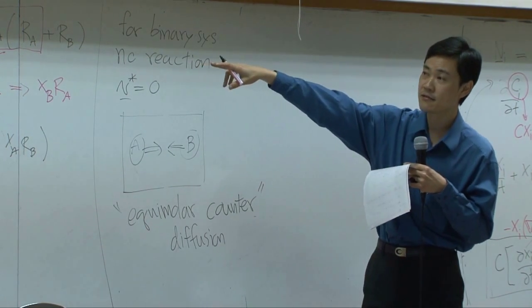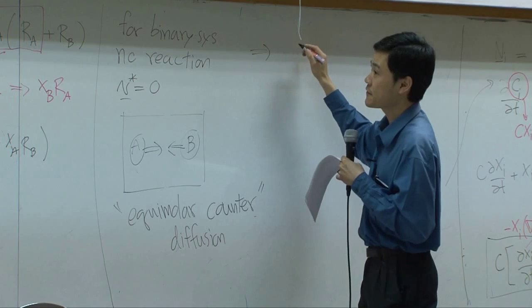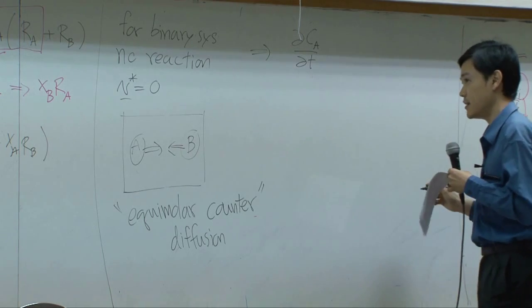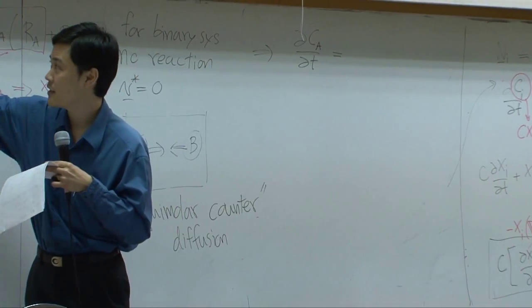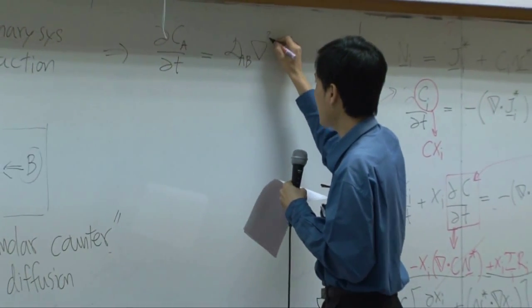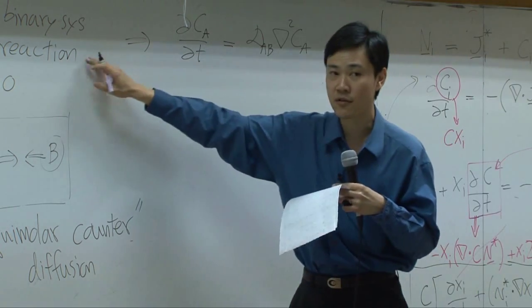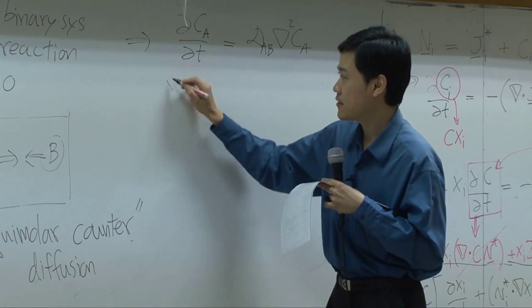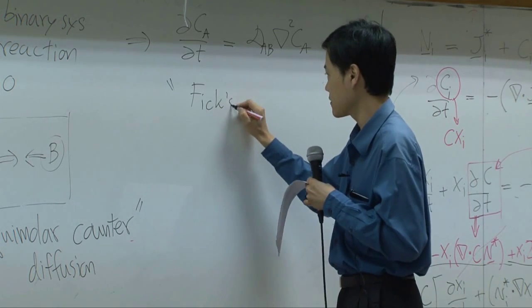If v star is zero, you can reduce that equation, just eliminate v star. Then you have c dxa, which can be converted into dca by dt, equal to this term. I can bring c inside because c is constant. You have dab del squared ca. The rest is zero because in this system there is no reaction. This equation has a name as well. It is called Fick's second law.